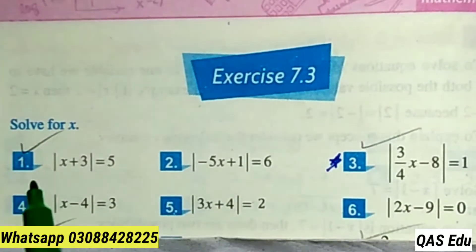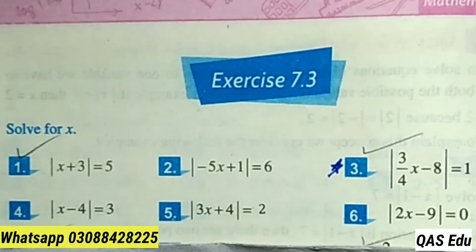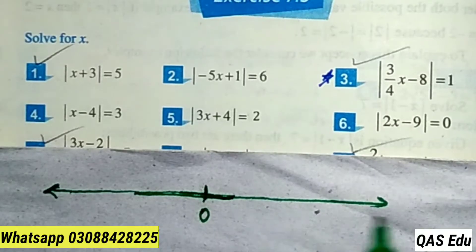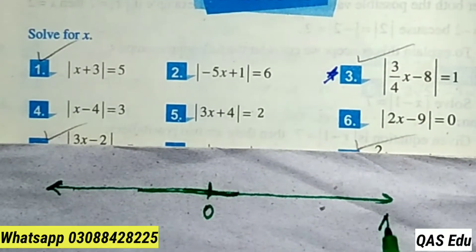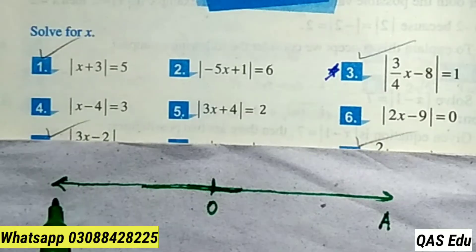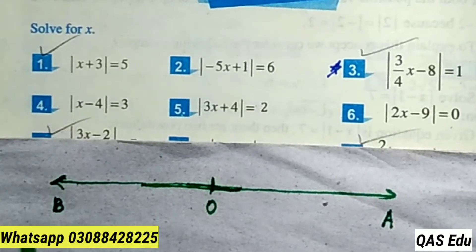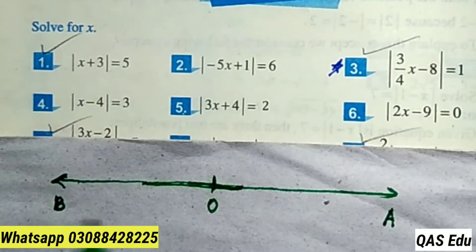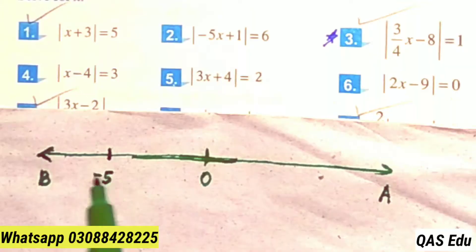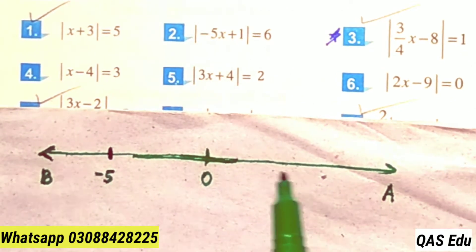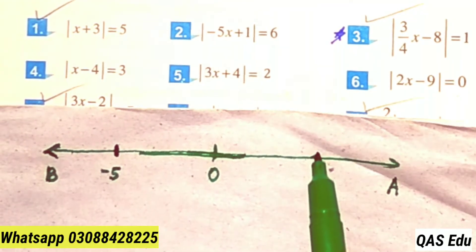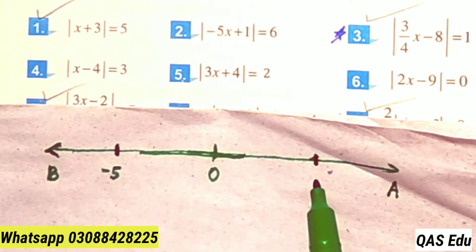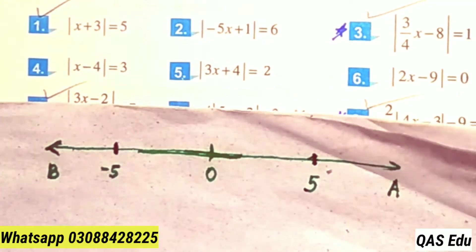First of all, let's set aside the absolute value and consider the real number line — the positive values and negative values. Let's suppose the point minus 5 and some point plus 5.